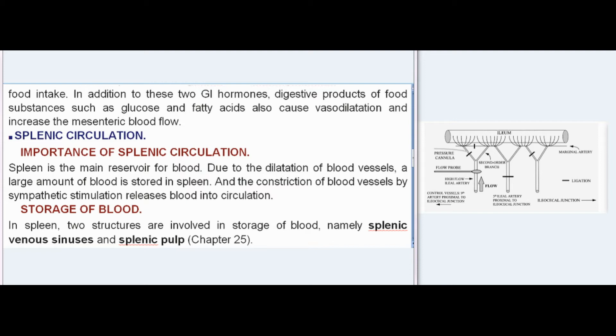Splenic Circulation - Importance. The spleen is the main reservoir for blood. Due to the dilatation of blood vessels, a large amount of blood is stored in the spleen, and constriction of blood vessels by sympathetic stimulation releases blood into circulation. In the spleen, two structures are involved in storage of blood: the splenic venous sinuses and the splenic pulp.